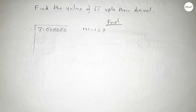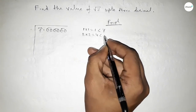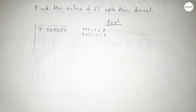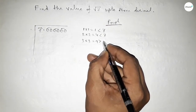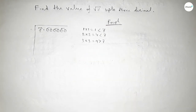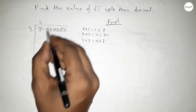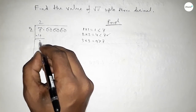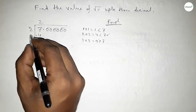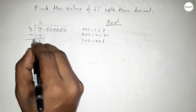Now what number should we put here? We need a number whose square is less than 7. If you put 1, 1 squared is less than 7. If you put 2, 2 squared is 4, which is less than 7. If you put 3, 3 squared is 9, which is greater than 7. So we should put here 2.